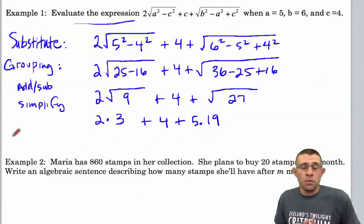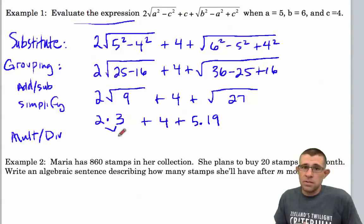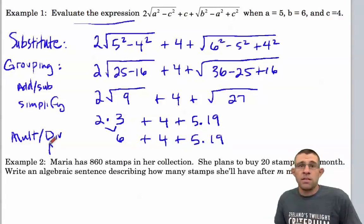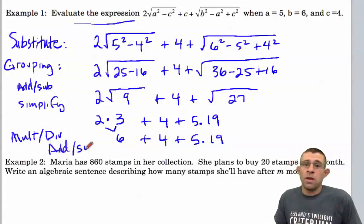All right, finally, we're able to move on to our multiplication and division. And we see that we have 2 times 3, which results in 6 plus 4 plus 5.19. Now finally, we're down to one operation. That's the addition and subtraction. So adding from left to right, we'll end up with 15.19.